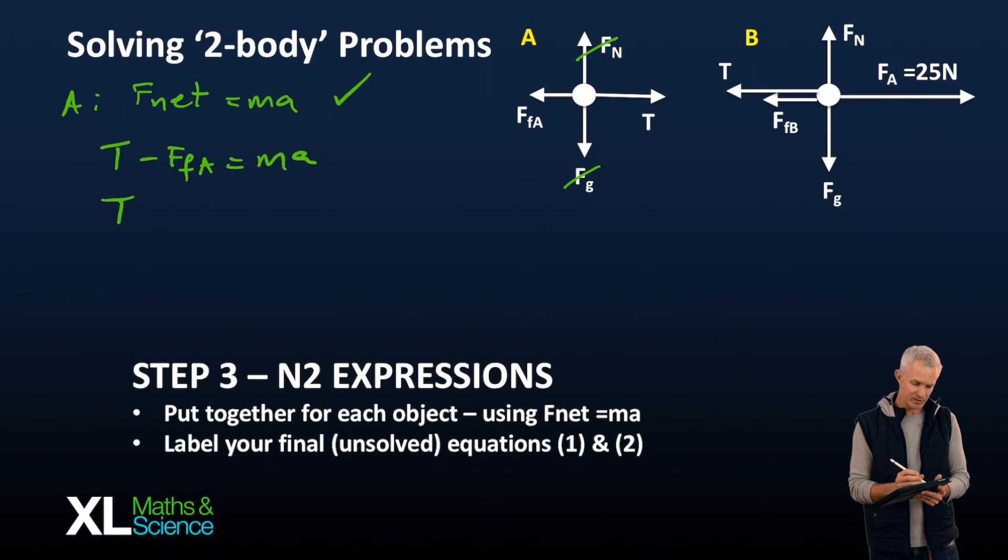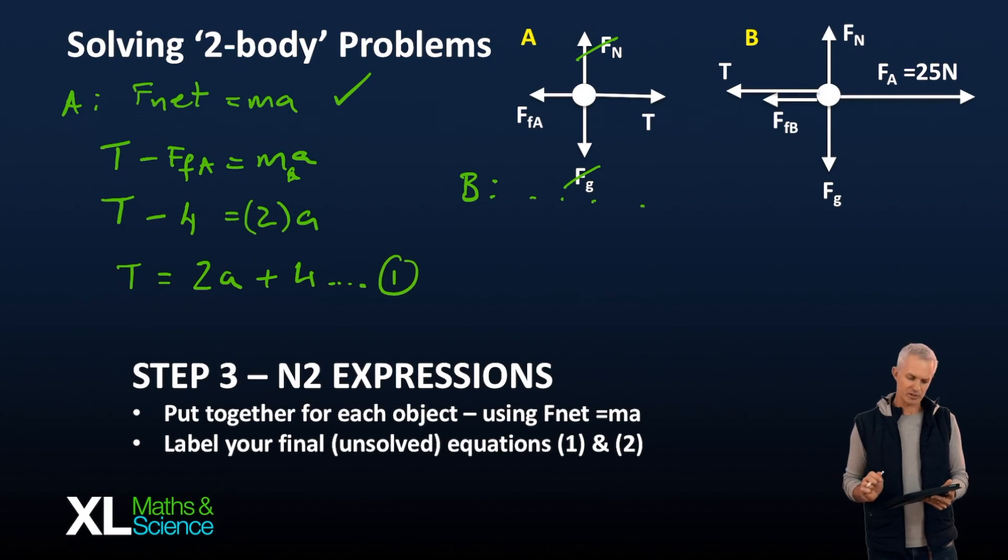The tension minus the friction is going to give us MA. Now we were told some values. We don't know what T is, but we knew that F was 4 for A and the mass of A is 2 kgs. We can simplify and say T is equal to 2A plus 4. We're going to do the same for B. I'm not going to go through the whole thing now. But at the end of the day, you're going to end up with two unsolved equations.